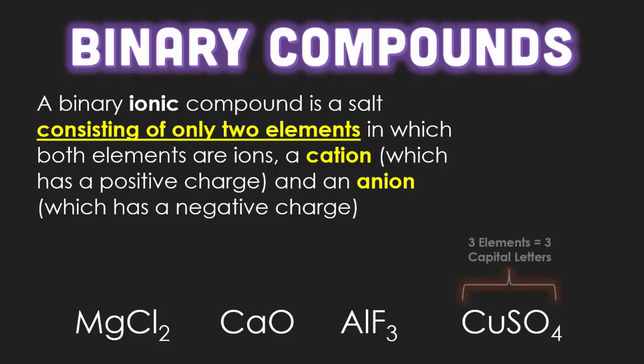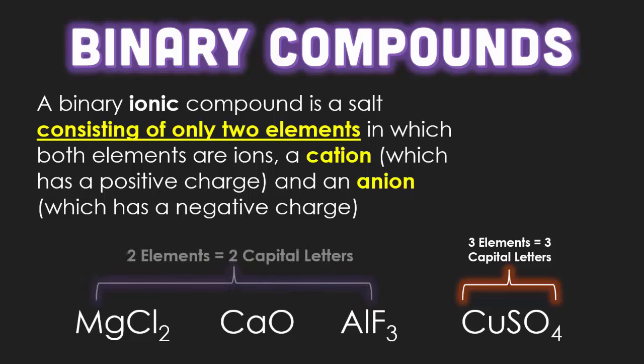Looking at the four examples, on the far right we have CuSO₄. This is not considered binary because it has three elements: copper, sulfur, and oxygen. Therefore, magnesium chloride, calcium oxide, and aluminum fluoride are binary because they contain only two elements — as you can remember from our Unit 1 video lessons.